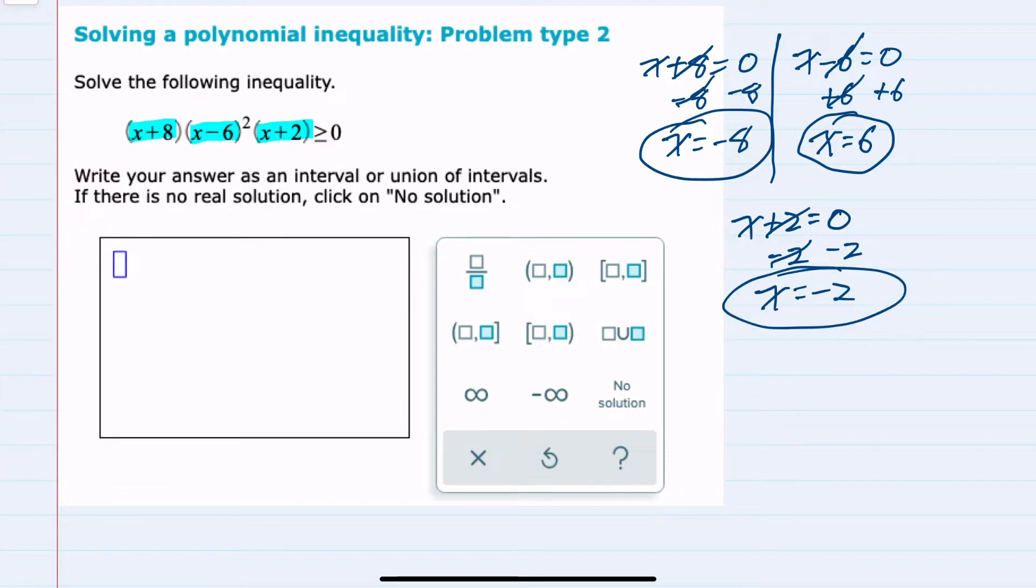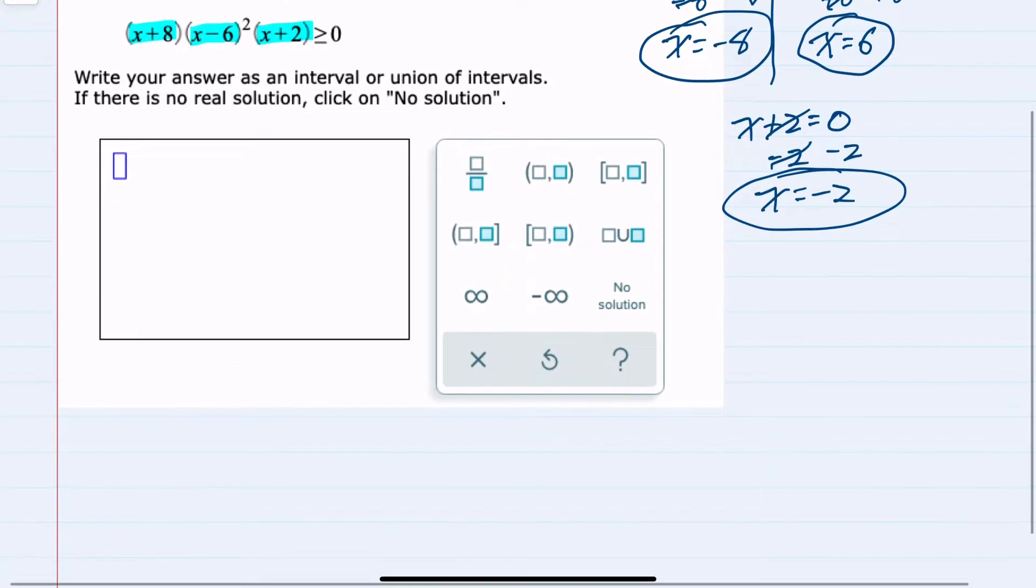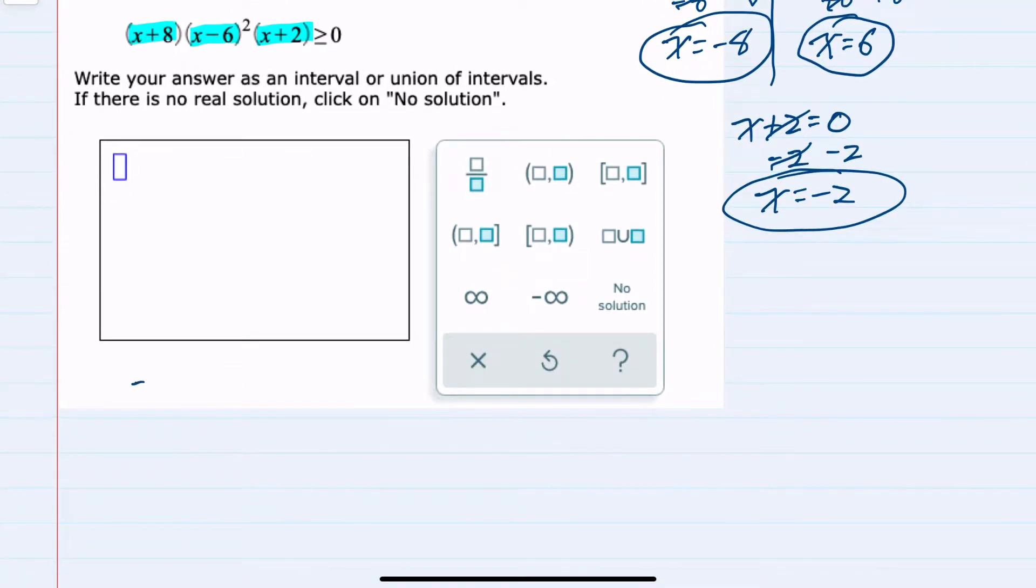So we have three points of interest here: negative 8, 6, and negative 2. I'm going to use that to create a chart, and I'm going to list those out in order. We have negative 8, negative 2, and 6.